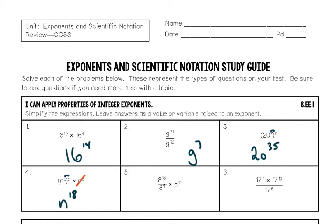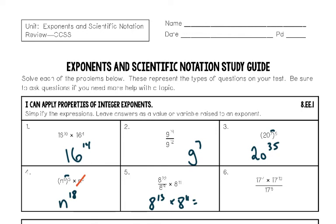Number five has an example of the quotient rule and then the product rule. Starting with the quotient: 8 to the twenty-second power over 8 to the ninth power — same base being divided, so subtract the exponents. Twenty-two minus nine is thirteen, so 8 to the thirteenth power, kept on top since there are more numbers on top. Then bring down times 8 to the eleventh power — now it's the product rule, same base being multiplied, so add the exponents. Final answer: 8 to the twenty-fourth power.